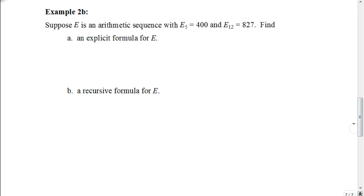Now I want you to try this on your own. Pause the video and hit play when you're ready to check your answer. Find an explicit formula and recursive formula when the fifth term is 400 and the twelfth term is 827.